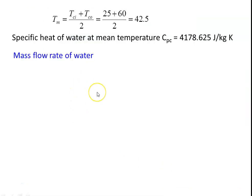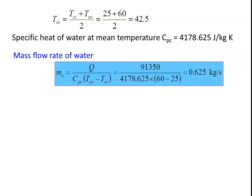Given data: mass of hot oil = 0.9 kg/s, CPH = 1450 J/kgK, THi = 230°C, THo = 160°C, TCi = 25°C, TCo = 60°C, U = 420 W/m²K. The heat transfer rate Q = MH × CPH × (THi - THo) = 0.9 × 1450 × (230 - 160) = 91,350 W. For water, the mean temperature is 42.5°C, giving CPC = 4178.625 J/kgK. The mass flow rate of water: MC = Q / [CPC × (TCo - TCi)] = 91,350 / [4178.625 × (60 - 25)] = 0.625 kg/s.